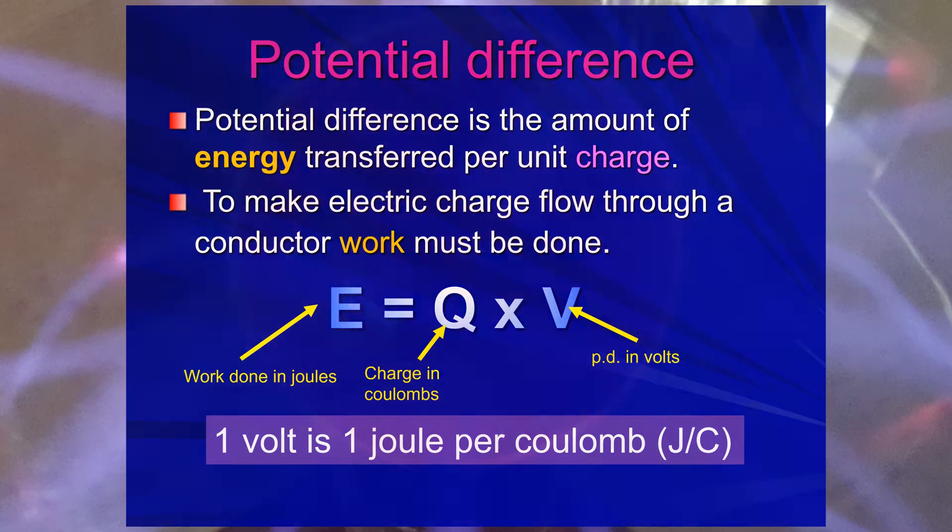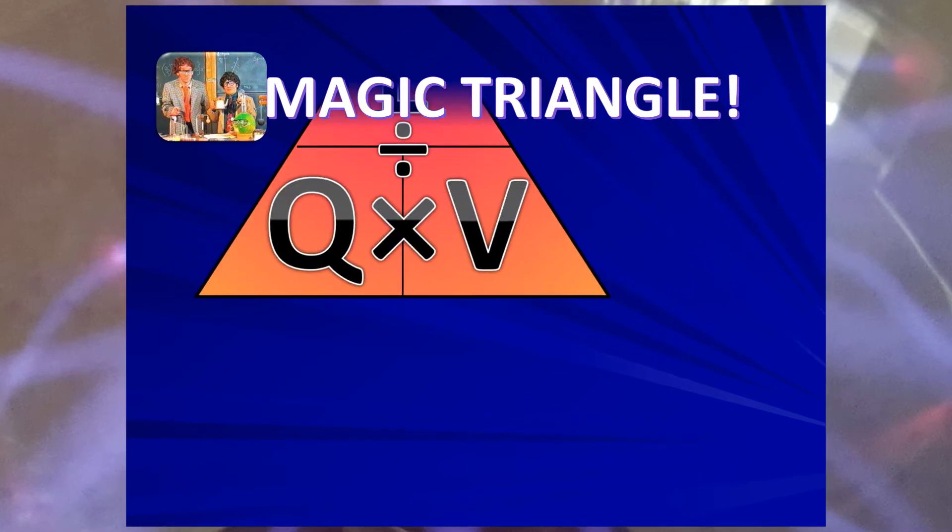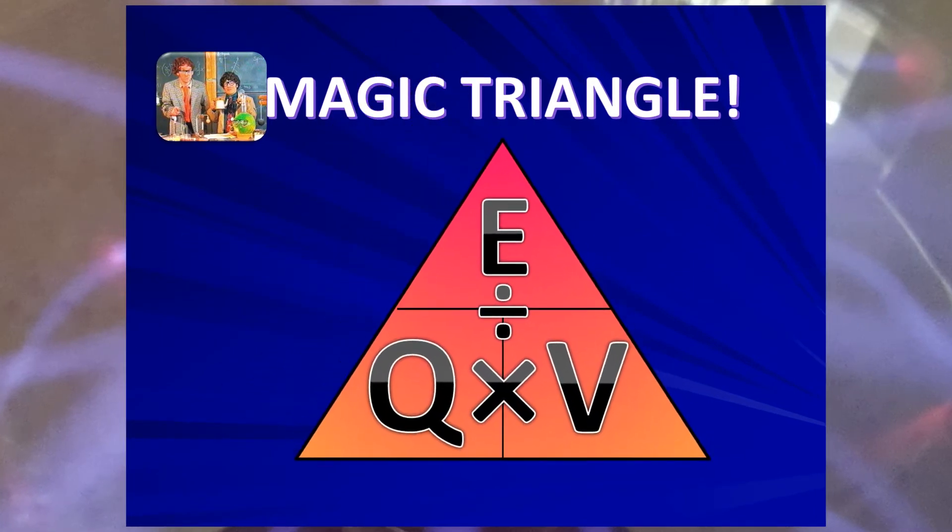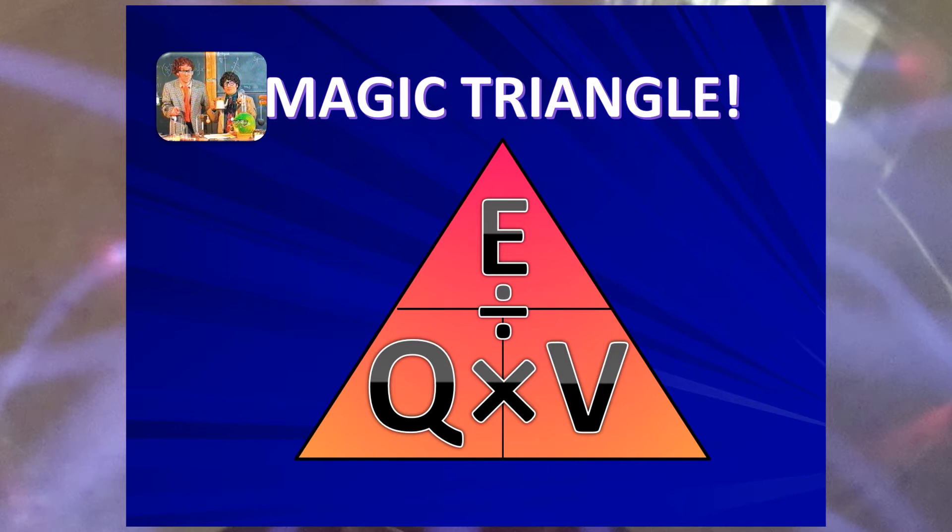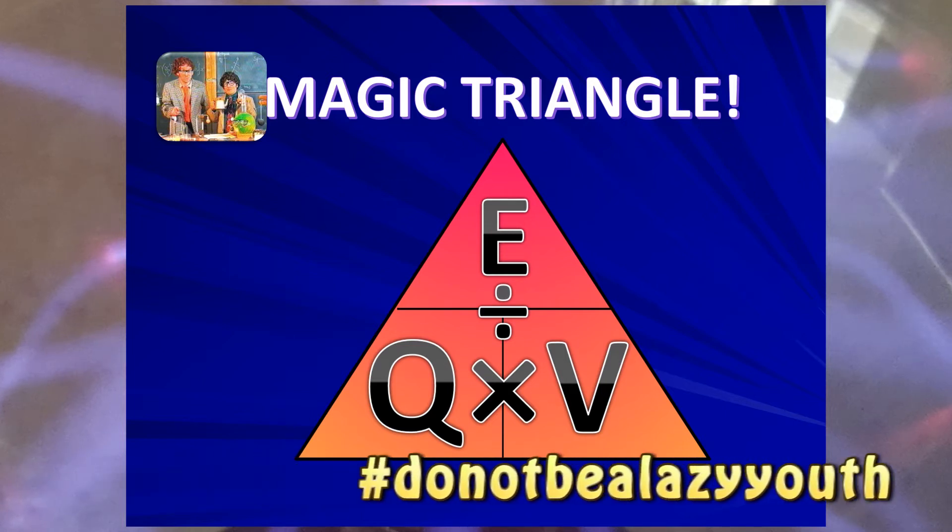Now, the magic triangle, what's that going to look like? Well, if E equals Q times V, the things we times together, always go on the bottom of the magic triangle. There it is. Get that in your brain. They love to ask questions about this, but people always forget to learn this equation. Get it in your brain. You'll pick up those extra marks and beat the competition.